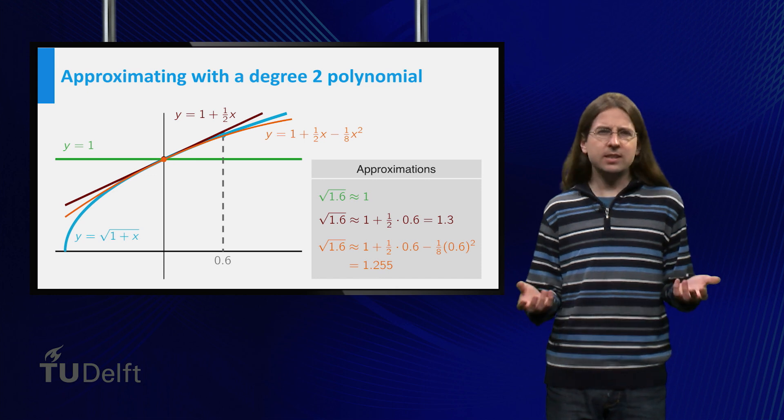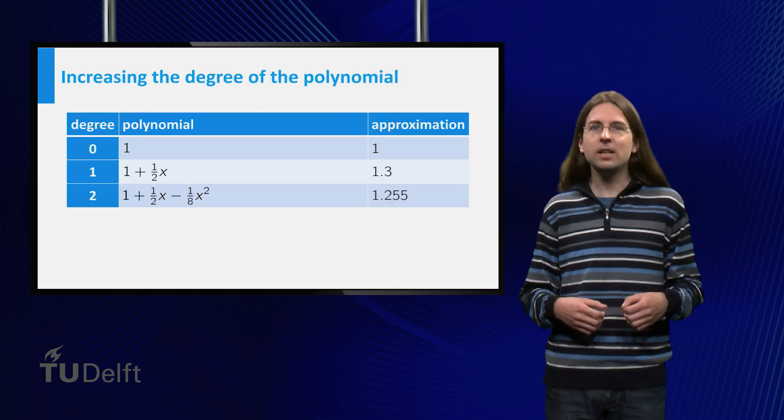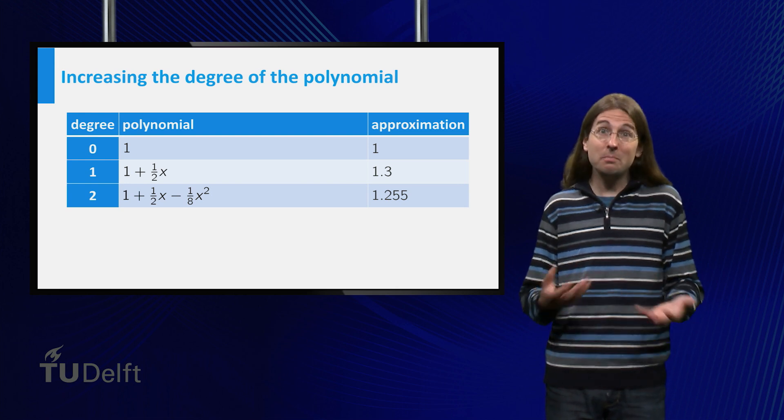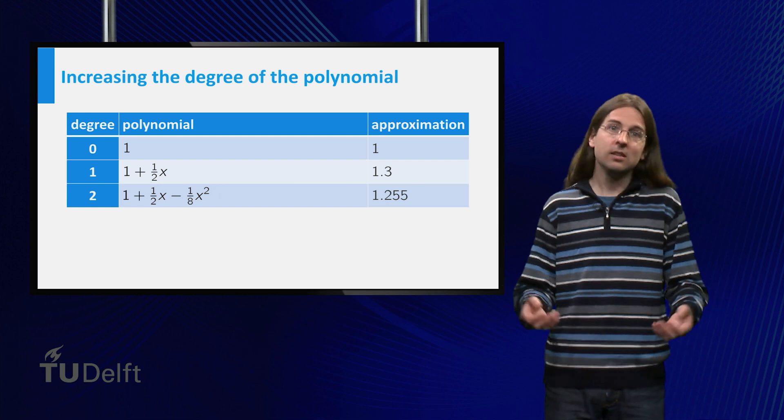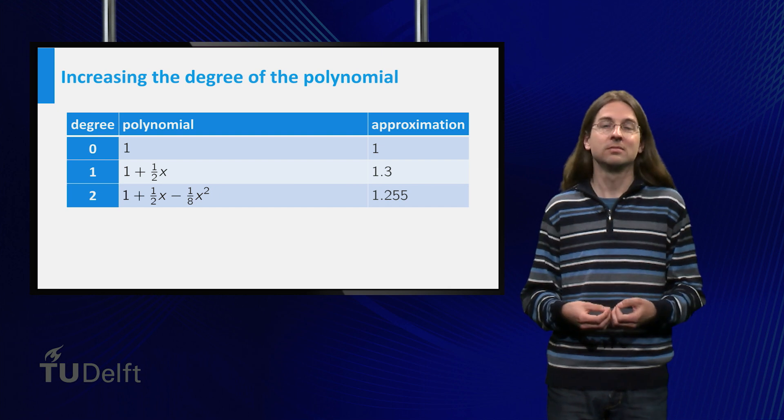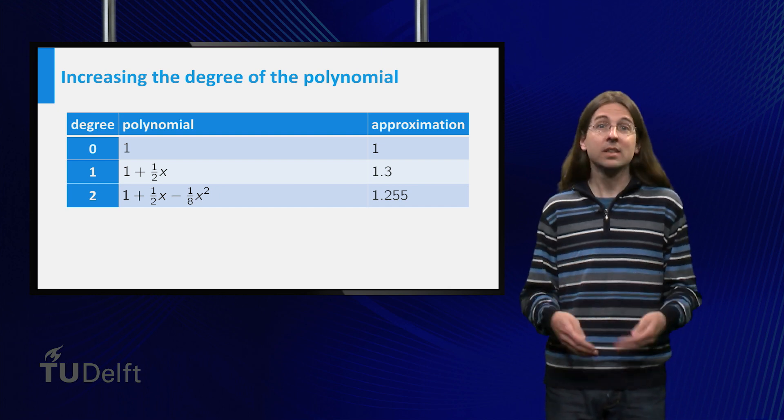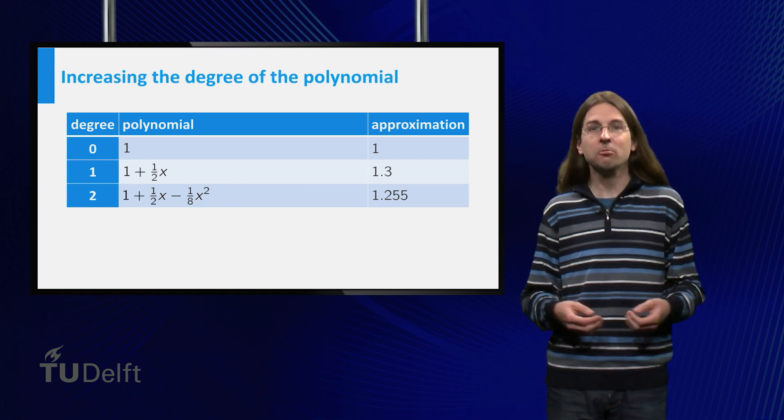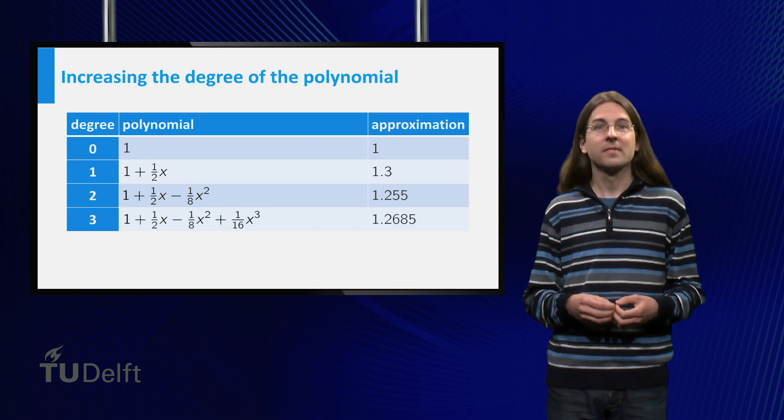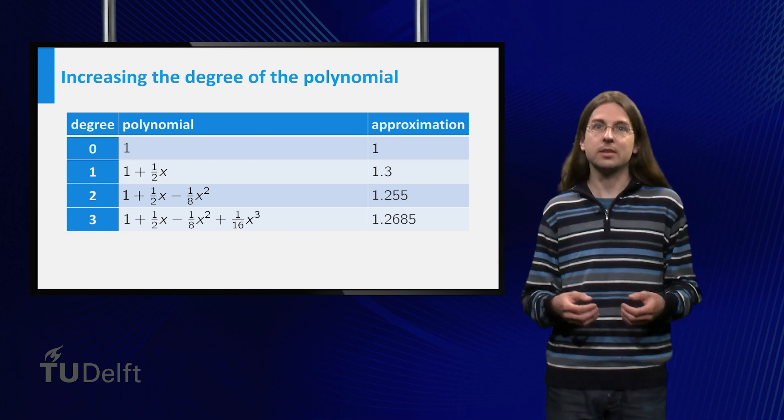A better approximation for square root 1.6 is 1.255. But we are not yet satisfied with our approximation. We want 10 digits to fill up the screen of our calculator. How can we make an even better approximation? Well, we could try approximating our function with a degree 3 polynomial. The best approximation of f with a degree 3 polynomial is the Taylor polynomial of degree 3, and it turns out to be the one on the slide.